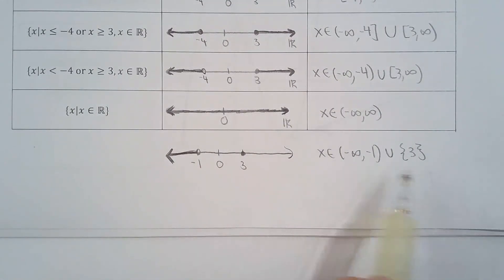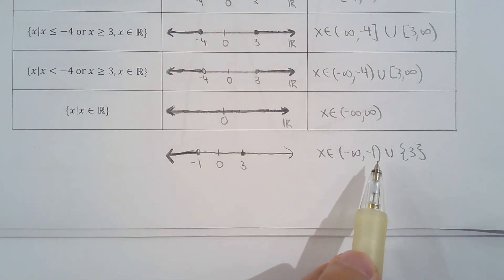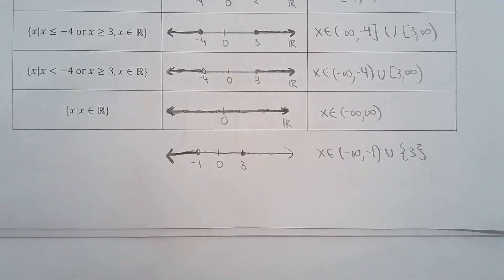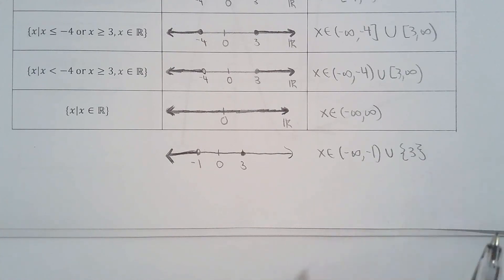So to summarize: this is interval notation and this is number line. For number lines, use a closed circle or open circle to show whether you include or exclude the endpoint. For interval notation, use square brackets to include and round brackets to exclude. Around infinity and negative infinity it must always be a round bracket — it's unbounded. And brace brackets are helpful for including single values.